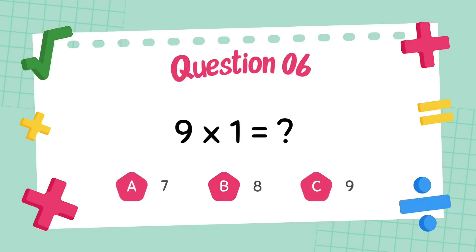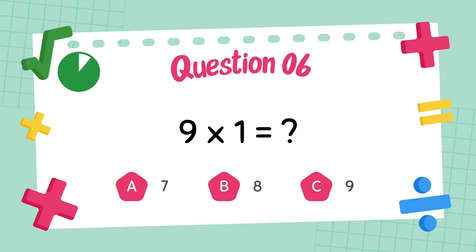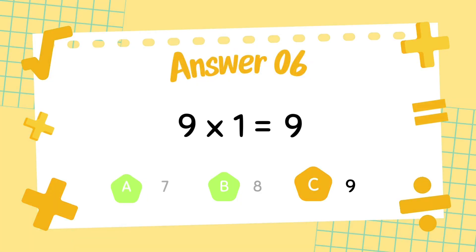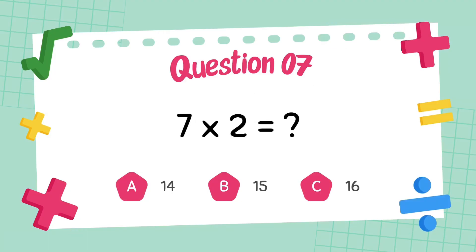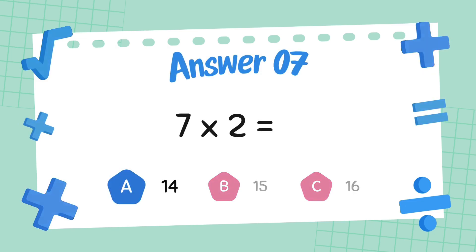What is 9 multiply 1? The answer is 9. What is 7 multiply 2? The answer is 14.